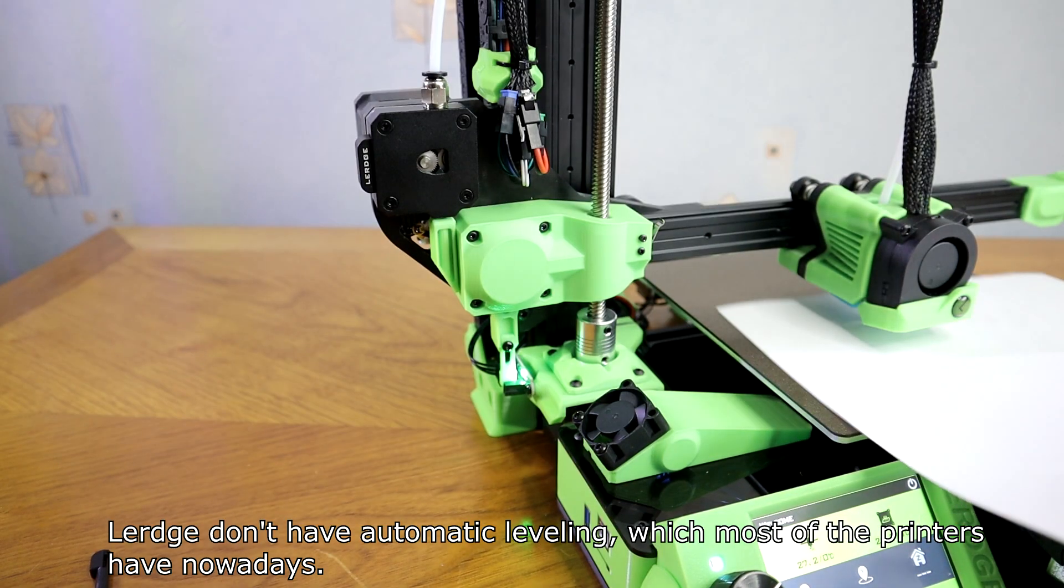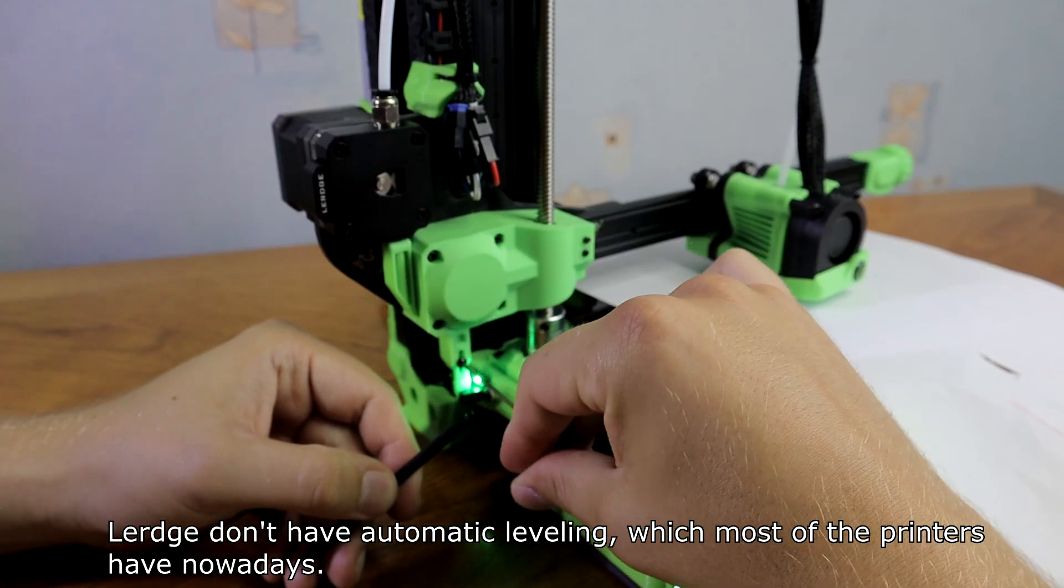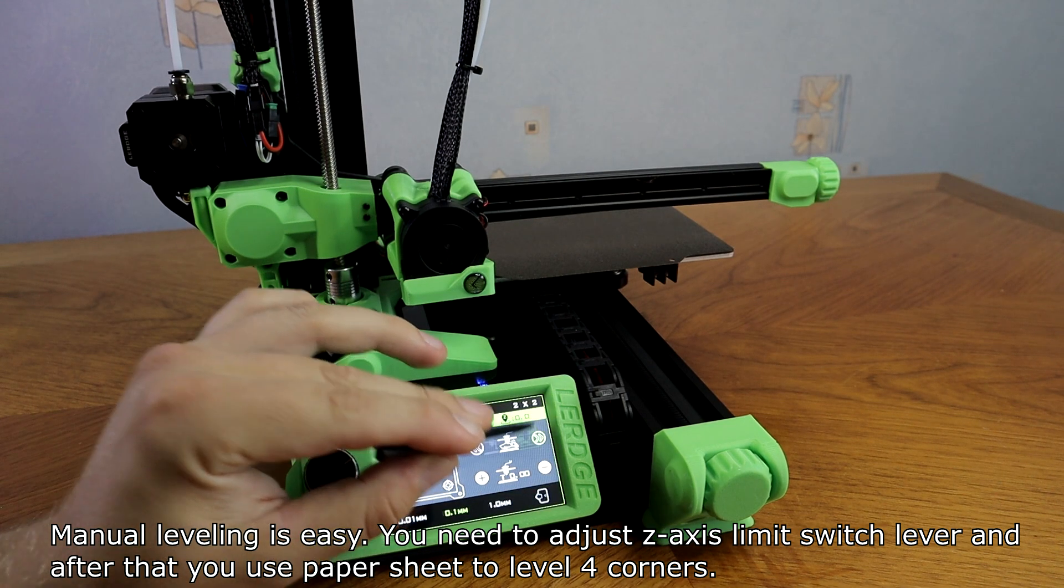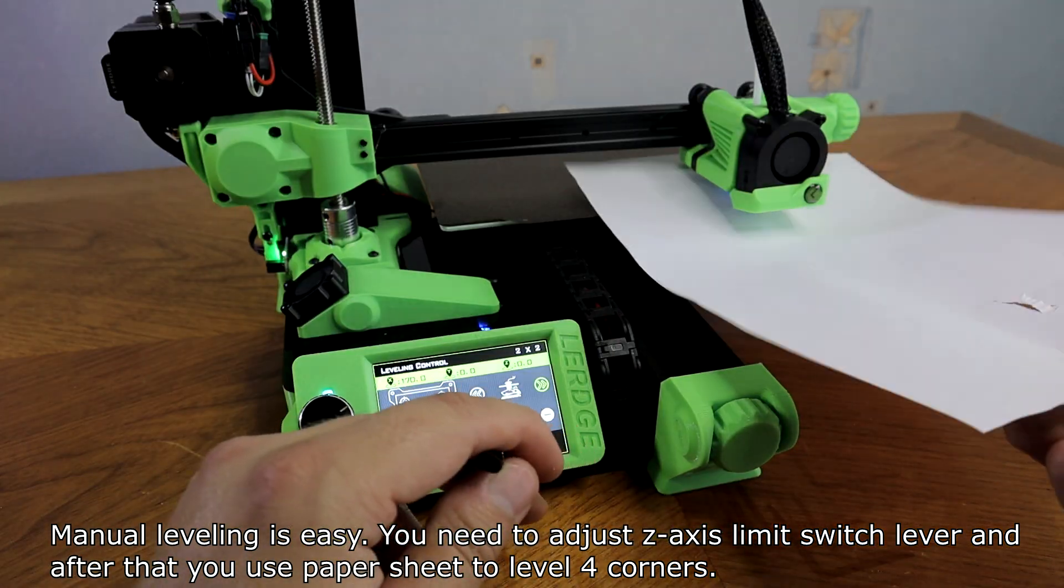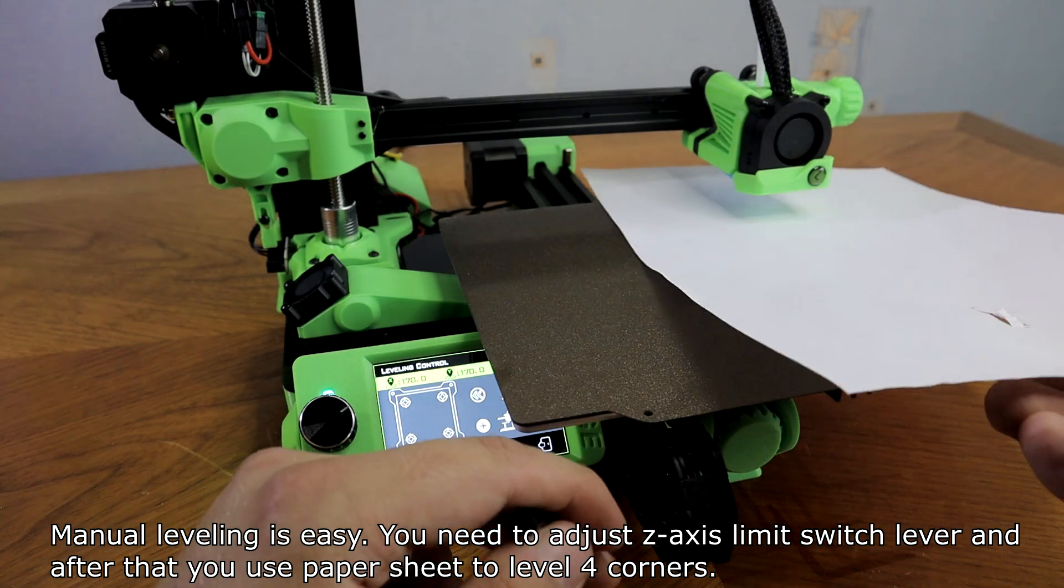Lurch doesn't have automatic leveling, which most printers have nowadays. Manual leveling is easy, you need to adjust the Z-axis limit switch lever and after that you use a paper sheet to level 4 corners.